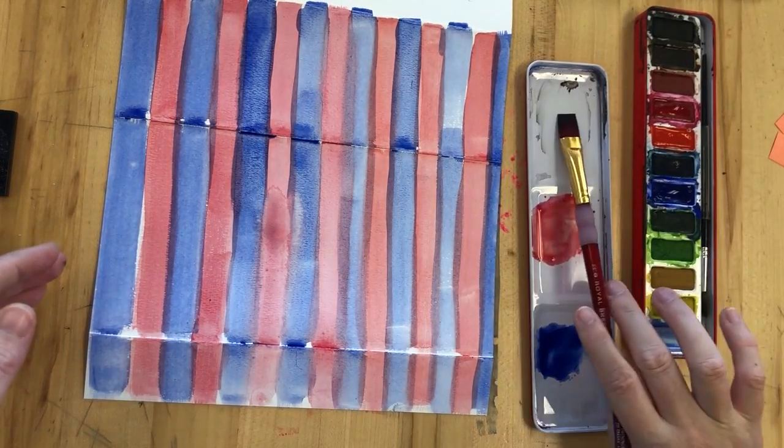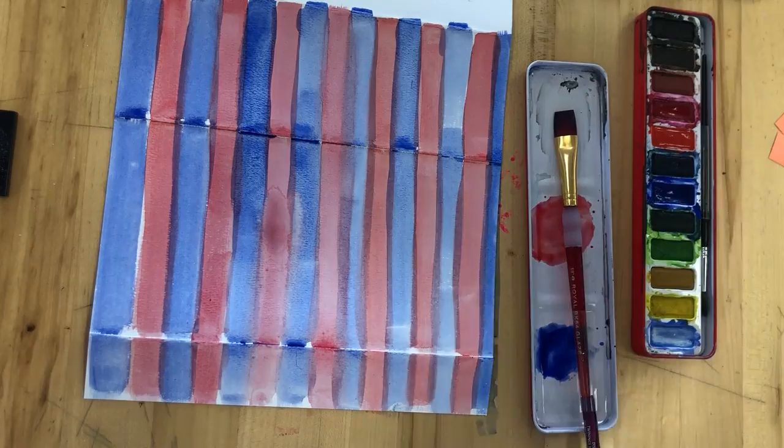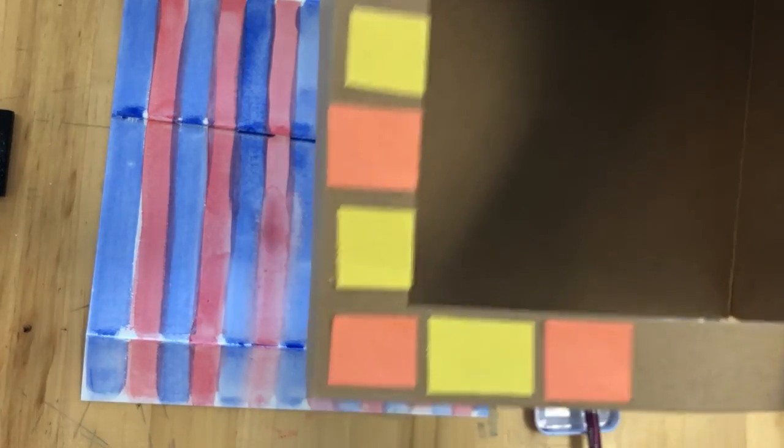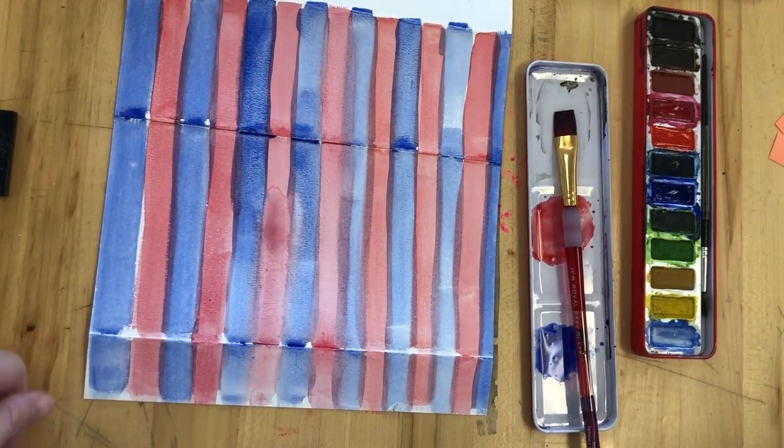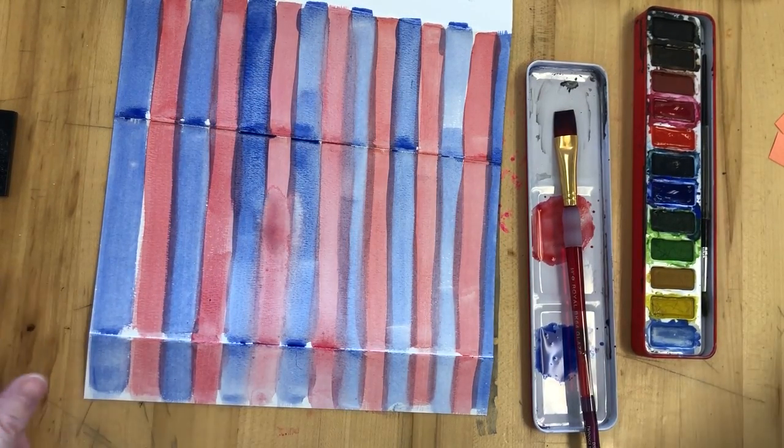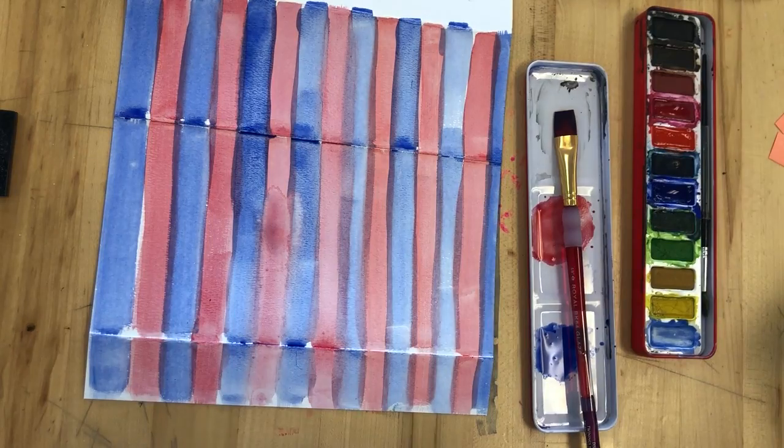So today's steps were gluing on rectangles for the bricks on the front of your shop and then painting stripes onto a piece of paper that's going to fold up to be the roof of your shop. All right. Well done.